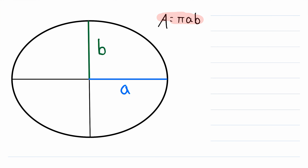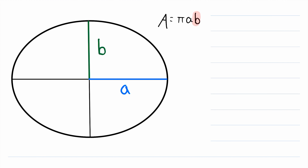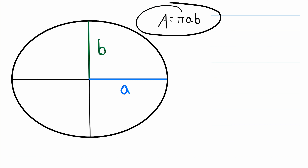Well, we have to use this handy-dandy area formula. The area of an ellipse is equal to A, the length of the semi-major axis — which is half the length of the major axis — times B, the length of the semi-minor axis, which is half the length of the minor axis. So it's a very nice, simple formula: the area of an ellipse is equal to pi times the length of the semi-major axis times the length of the semi-minor axis.